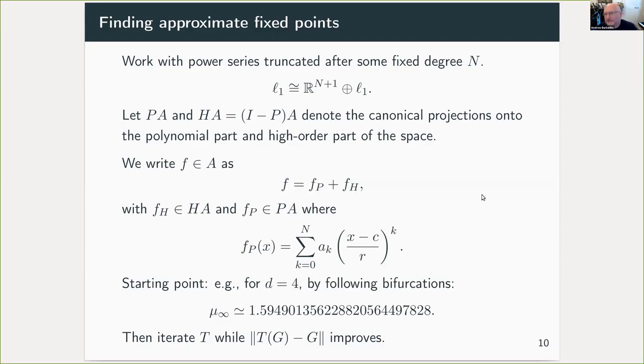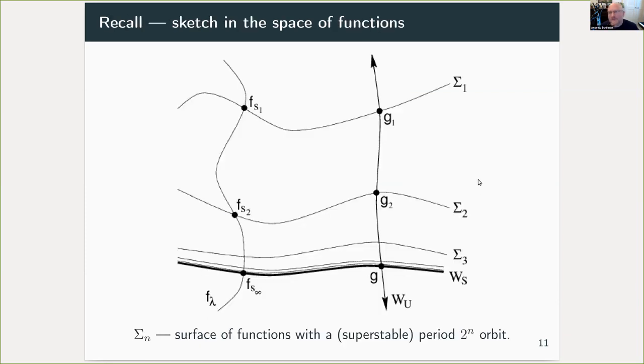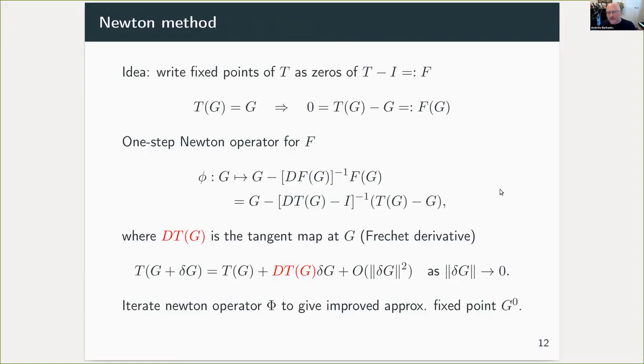Then the question is, how do we get an approximate fixed point? If I return to our little sketch in function space, these surfaces sigma n that I've indicated are the surfaces of functions having a period two to the n orbit of some given stability. A typical one parameter family that has a period doubling cascade forms a curve in this space that passes through these surfaces. So we can find a point close to the stable manifold of our fixed point G by just following numerically period doubling bifurcations of a prototype family up to some very high number of bifurcations. That gives us a point somewhere here. And then we simply apply the renormalization operator repeatedly to move inwards along the stable manifold. We do that as long as the quality of our guess seems to improve, and that gives us a crude guess.